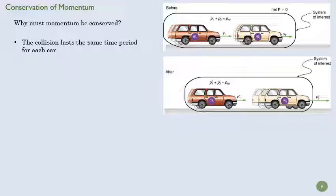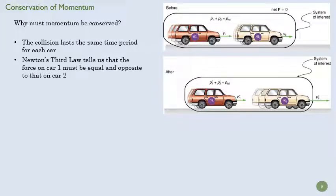Okay, so the collision lasts the same time for each car. So that's our delta T, right? And that makes good sense to us. You can't have a collision, this car can't be colliding with this car when this car is not colliding with that one. Both of them are in the system. So our delta T has to be the same.